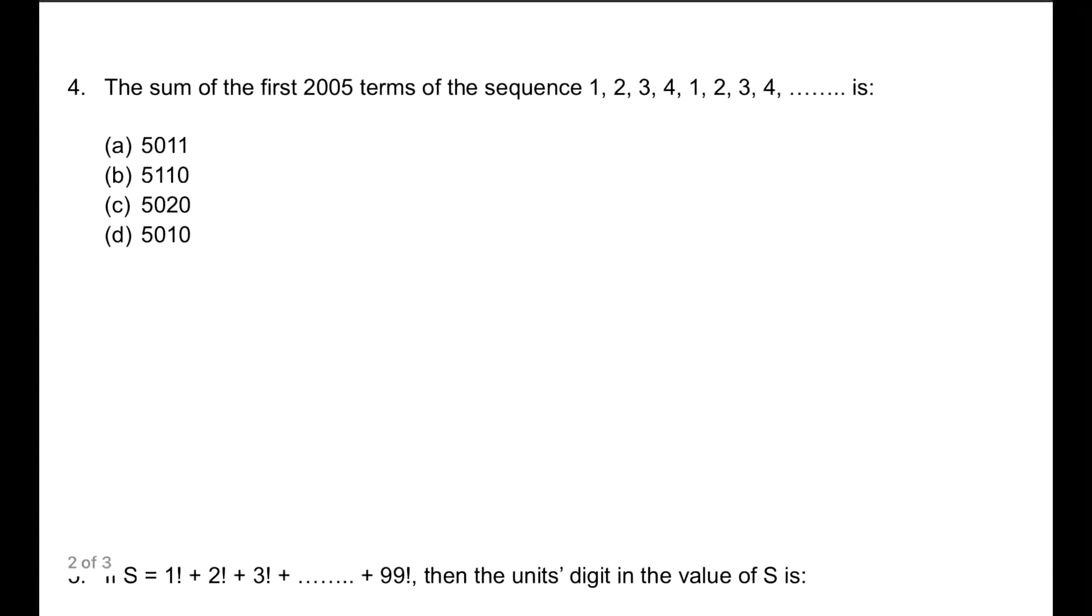Here comes the 4th question. The sum of the first 2005 terms of this sequence. You'll say I can find the sum of the sequence, but what to do when the sequence is getting repeated? Not really pathetic. How to do this? First, understand that 2005 terms you have to find, and every 4 terms, after every 4 terms, the pattern is getting repeated. So imagine dividing 2005 by 4. What will be the remainder? 2004 is divisible by 4, so remainder is 1, and quotient is 501.